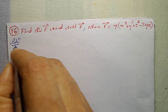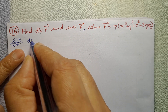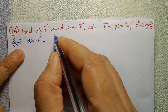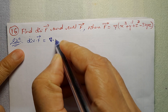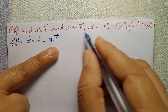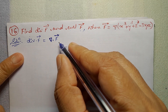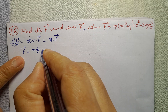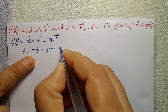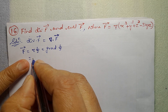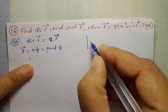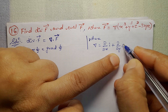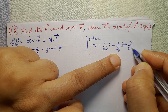Solution for this problem. Divergence of vector F is del dot vector F. Divergence of F equals del of phi. Here del equals d/dx i + d/dy j + d/dz k.